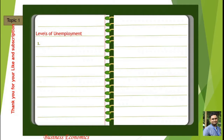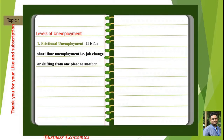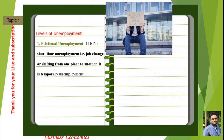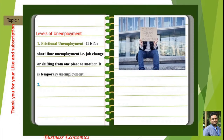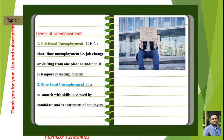The first type is frictional unemployment. This occurs for a shorter period of time — for example, a job change, shifting from one place to another, or due to certain external environmental conditions where people are unable to find a job. For example, the outbreak of COVID-19.